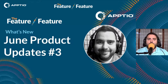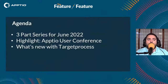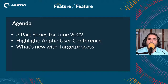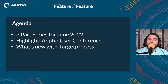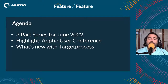In line with our Aptio user conference this month, these updates cover some of the highlights that have rolled up over the past few months, as well as some new features. Talking about the agenda: this is the last episode of our three-part series for June, aligned with our Aptio User Conference on June 8th. I'm going to give a highlight description of that conference and then dive into what's new with Target Process.